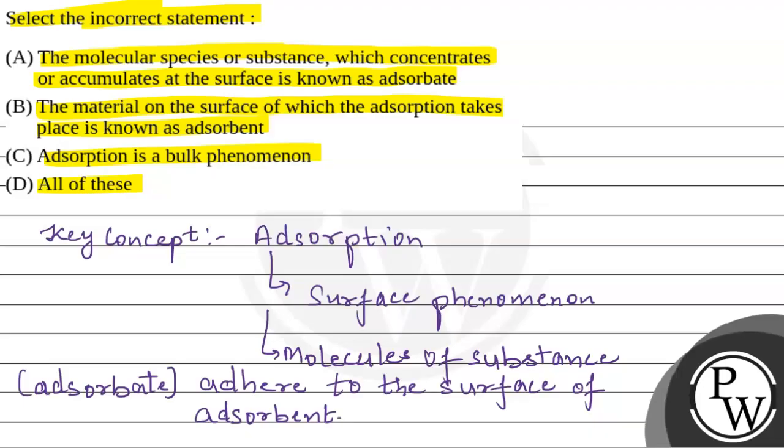Now, I will explain the answer. Yahaan par option number A mein bola gaya hai, ki woh molecular species ya phir substance, jo concentrate karate hai, ya phir accumulate hootay hai at the surface, unko hum kya bolte hain? Adsorbate.